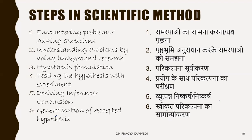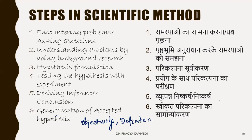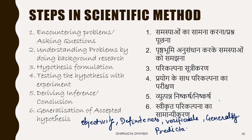Now the question is: what characteristics does the scientific method have? There are six basic characteristics of scientific method, and those are: objectivity, definiteness, verifiability, generality, predictability, and finally dynamicity.